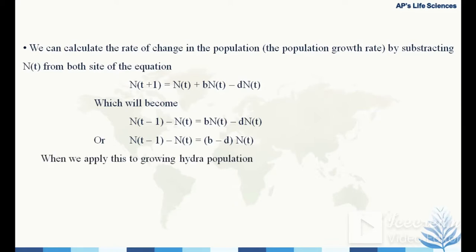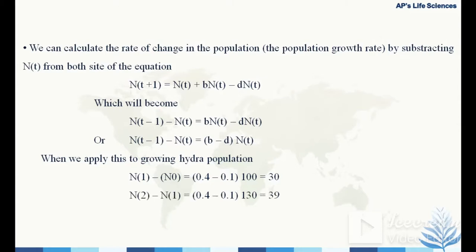Applying this to the hydra population: N1 − N0 = (0.4 − 0.1) × 100 = 30, which is the per capita growth for day 1. And N2 − N1 = (0.4 − 0.1) × 130 = 39, which is the per capita growth for day 2.